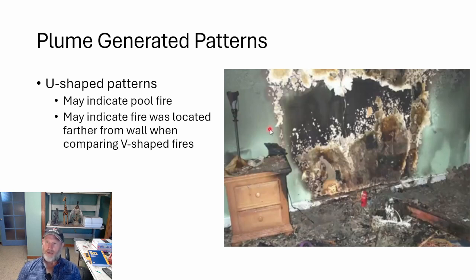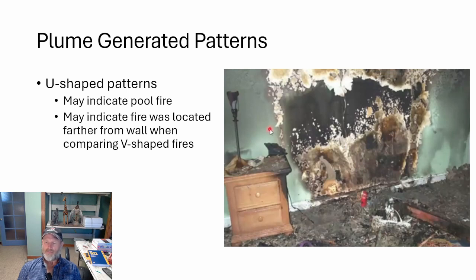Another pattern is the U-shaped pattern. This particular fire most likely came from a couch — a wide base, hot fire. You'll see the V, the U, and the hourglass as your standard profiles. The U-shape can be a pool fire, but in this case it's more likely a couch. It may indicate the fire was located farther from a wall. With a V-shaped pattern you get a very clear demarcated line from both heat release rate and soot. When farther away, the heat flux produces softer curves resulting in more of a U-pattern. Two identical fuel packages at different distances can produce a V-pattern versus a U-pattern.